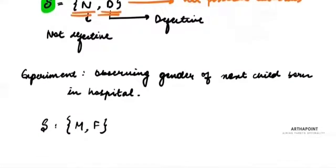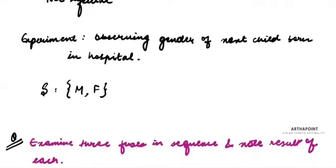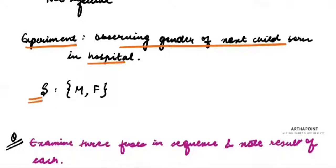Let's take one more example. The experiment is observing the gender of the next child born in a hospital. My sample space consists of all possible outcomes: male or female. When I give all possible outcomes of an experiment, that becomes my sample space.